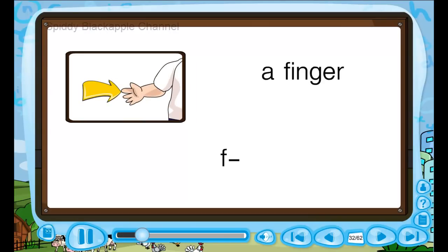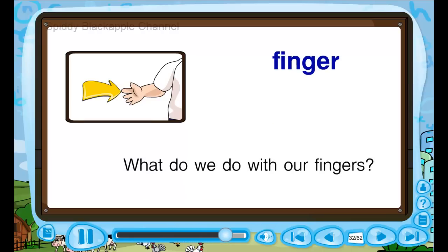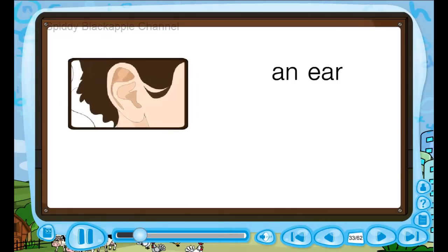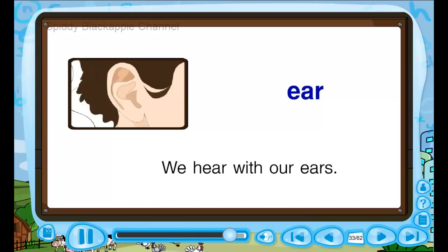A finger — F, I, N, G, E, R — finger. What do we do with our fingers? F, F, F — what do we do with our fingers? An ear — E, A, R — ear. We hear with our ears. E, E, E — we hear with our ears.